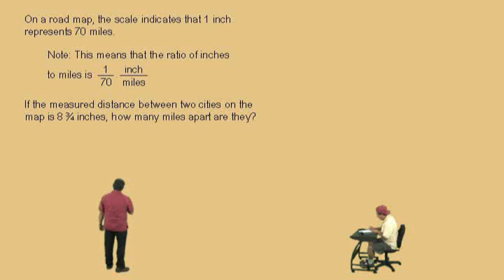Now, if the measured distance between two cities, Charlie, on the map is 8 and 3 fourths inches, how many miles apart are they? Well, the first thing we're going to do is we're going to change our fraction into a decimal. Remember, 8 and 3 fourths is a mixed number, and 3 divided by 4 is what, Charlie? 0.75. 0.75. So, our mixed number in decimal form is 8.75.